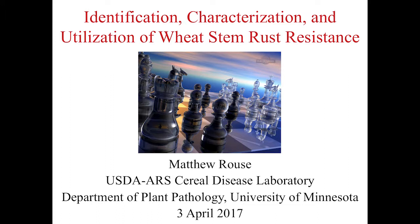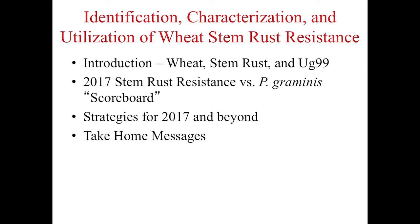Stem rust can be very devastating when you get an epidemic, and historically in the United States there were some pretty big epidemics. This chart shows the percent loss in the US wheat crop over time, from 1918 to 2008. In 1935, about 25% of the whole US wheat crop was lost. But starting around 1962, there have not been any epidemics in the United States.